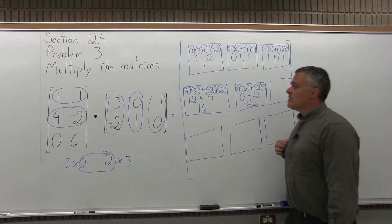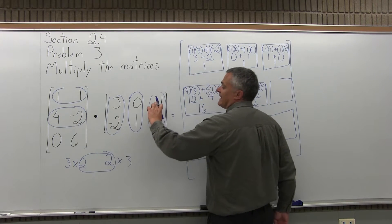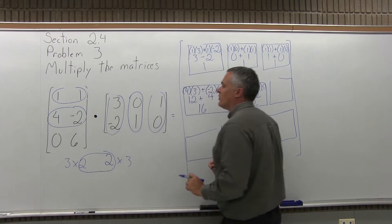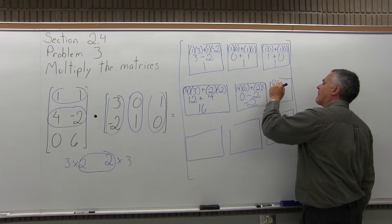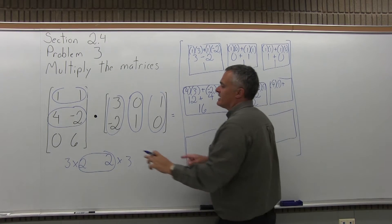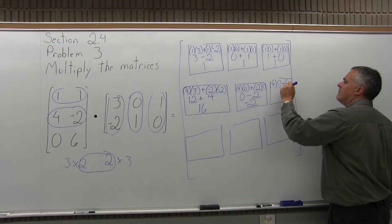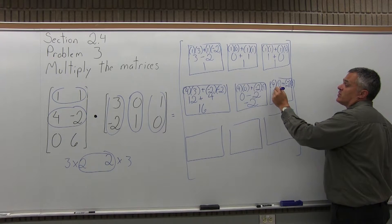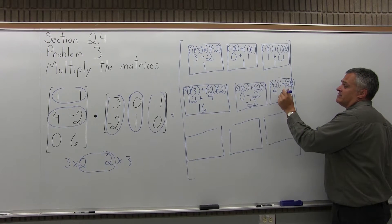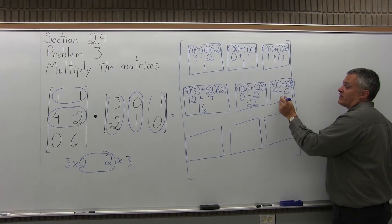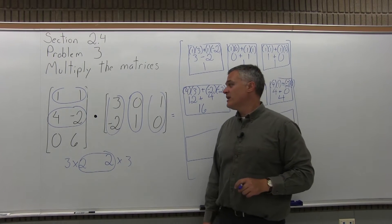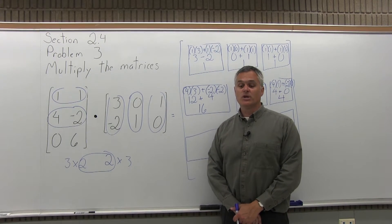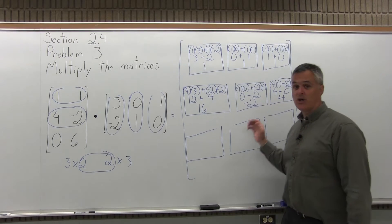Finally, to finish off this row, I multiply the middle row, 4, negative 2, times the last column, 1, 0, of the second matrix. First times first is 4 times 1, plus second times second is negative 2 times 0. So 4 times 1 is 4, and negative 2 times 0 is 0. 4 plus 0 is 4. We multiplied the middle row of the first matrix times the last column of the second, and that answer goes in the middle row and last column.